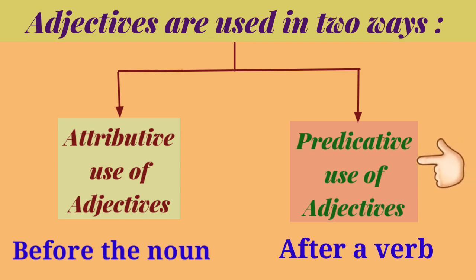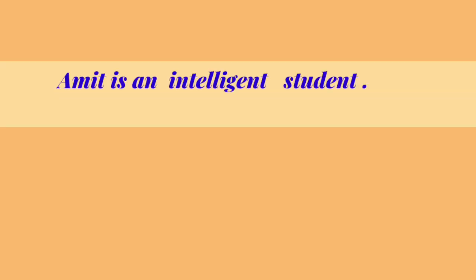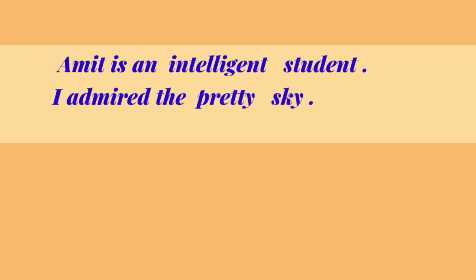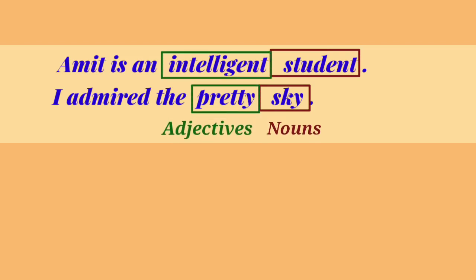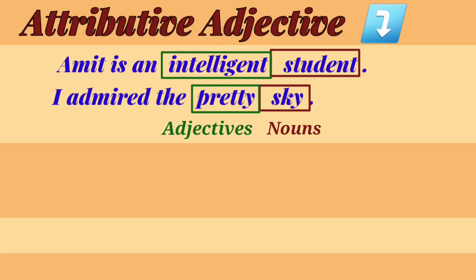Let's understand these with some examples. Amit is an intelligent student. I admired the pretty sky. Here, student and sky are nouns, and intelligent and pretty are adjectives which are used before the noun. Hence, intelligent and pretty are attributive adjectives.